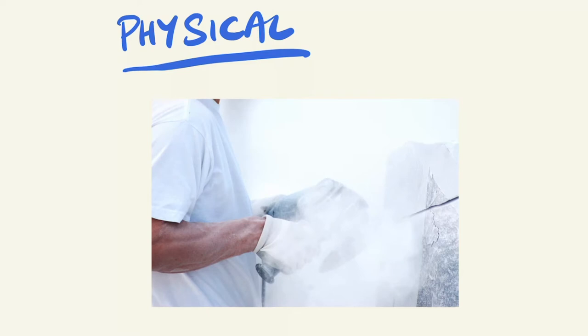For example, for solids, particle size can be a major factor. Smaller particle sizes have a greater surface to mass ratio and can pose a greater risk. Explosions can also occur if combustible dust comes into contact with an ignition source.